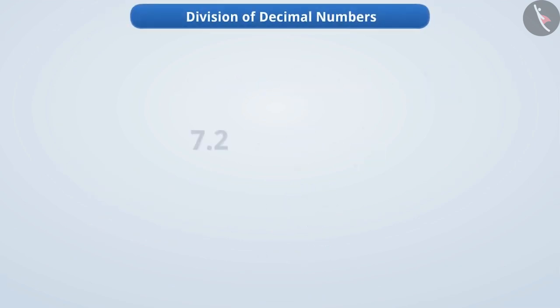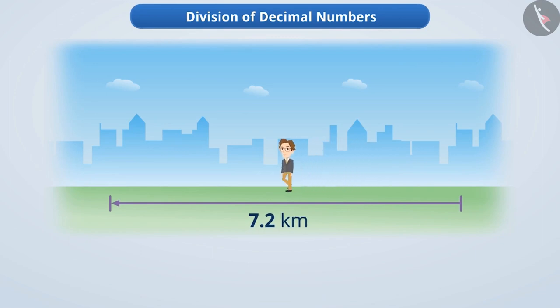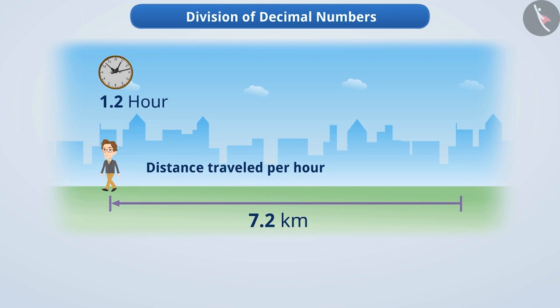Now let's understand how to divide one decimal number by another decimal number. A person covers a distance of 7.2 kilometers. If he takes 1.2 hours to cover such a distance, then how much distance will he be able to cover per hour? To find out the answer, we have to divide 7.2 kilometers by 1.2 hours. As you can see, here we are dividing one decimal number by another decimal number. Let's obtain the quotient of 7.2 divided by 1.2.